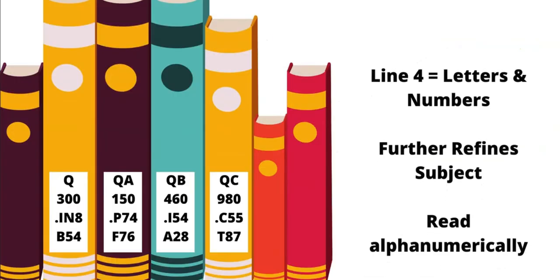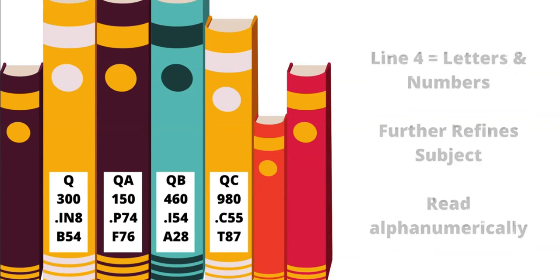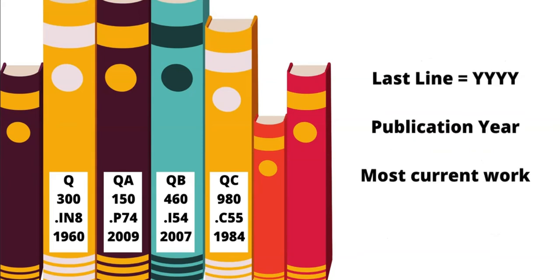Sometimes there is a fourth line, which is used to further refine the subject matter — read this as letters and numbers. The last line in the call number represents the publication year and will help you choose the most current work.